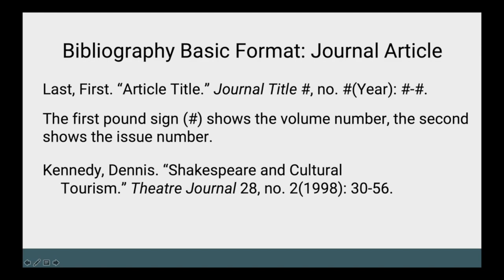So far we've talked about how to cite books in our footnotes and bibliographies. Now we'll talk about how to cite journal articles, which is similar but provides a little bit more information. In a bibliography for a journal article, you would again provide the author's last name, comma, first name, and then provide the title of the article inside quotation marks. The title of the journal would be italicized after the article title. After the journal title, you would provide the volume number and issue number, and then in parentheses the year of publication, followed by the page range in which that article is found. For example, we might have this article by Dennis Kennedy, 'Shakespeare and Cultural Tourism,' in the journal Theatre Journal, volume 28, issue number 2, from the year 1998, and that article can be found on pages 30 through 56.